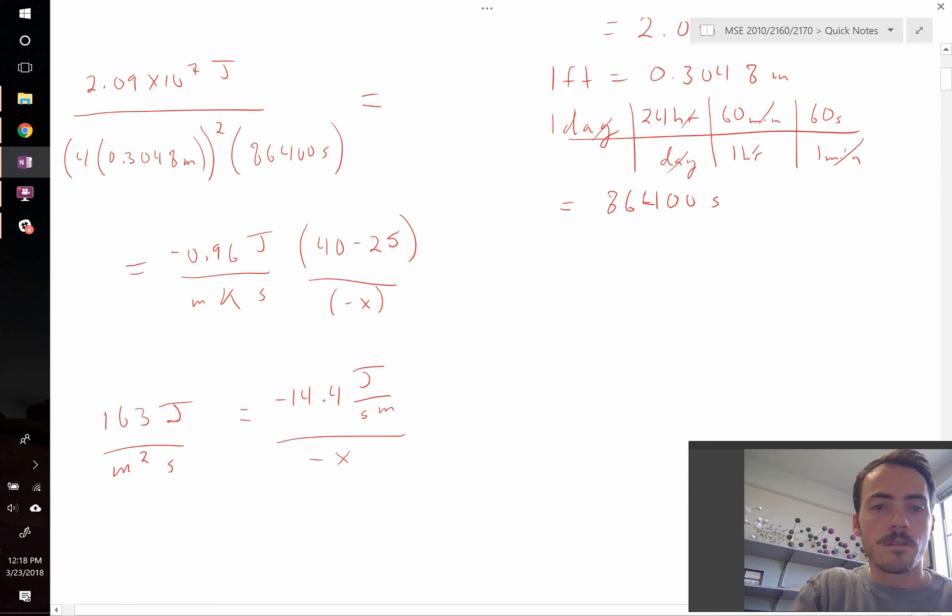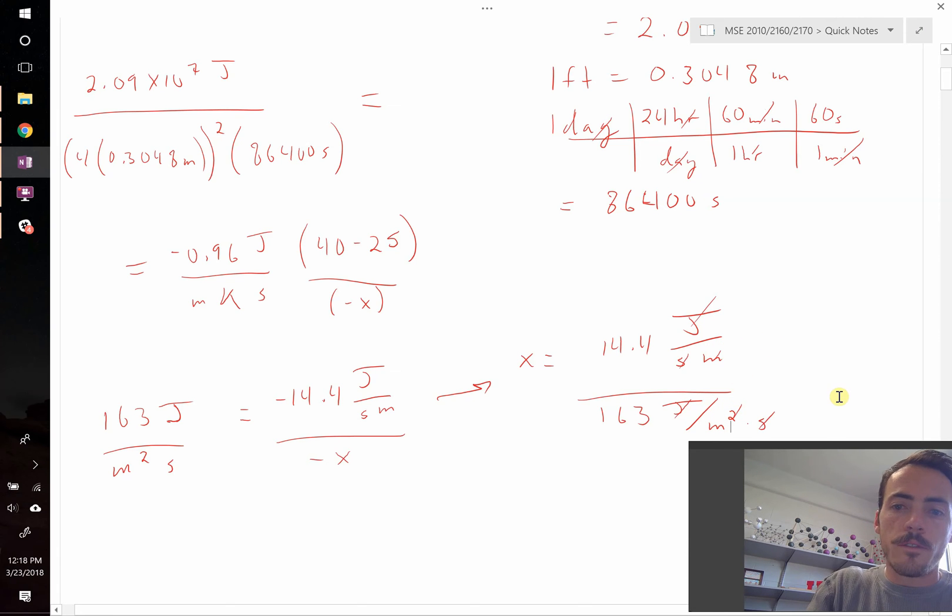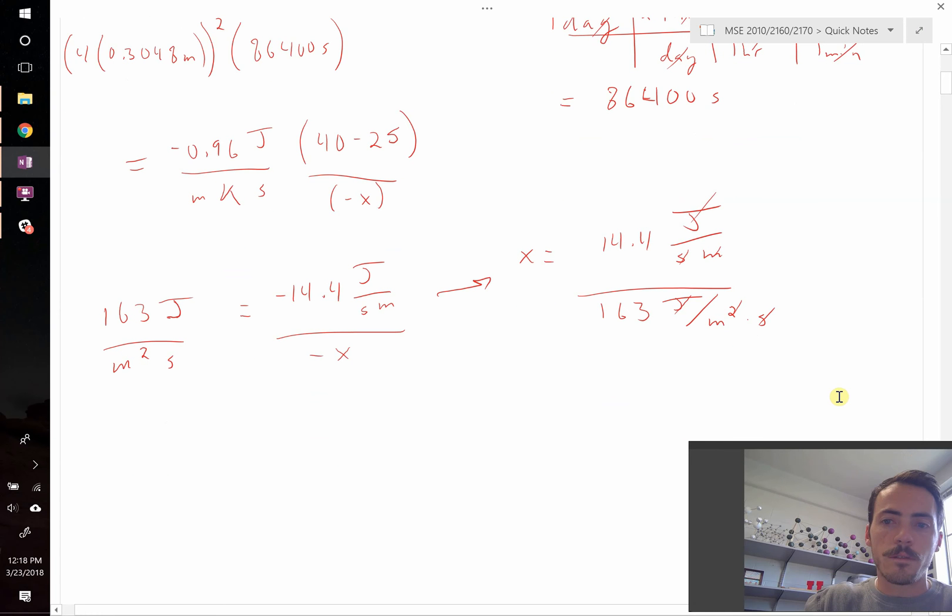So let's take away the negative sign on both sides and we are left with x equals 14.4 joules per second per meter divided by 163 joules per meter squared per second. Joules cancel, seconds cancel, one of the meters cancels, and we're left with our final answer: x is equal to 0.0883 meters.